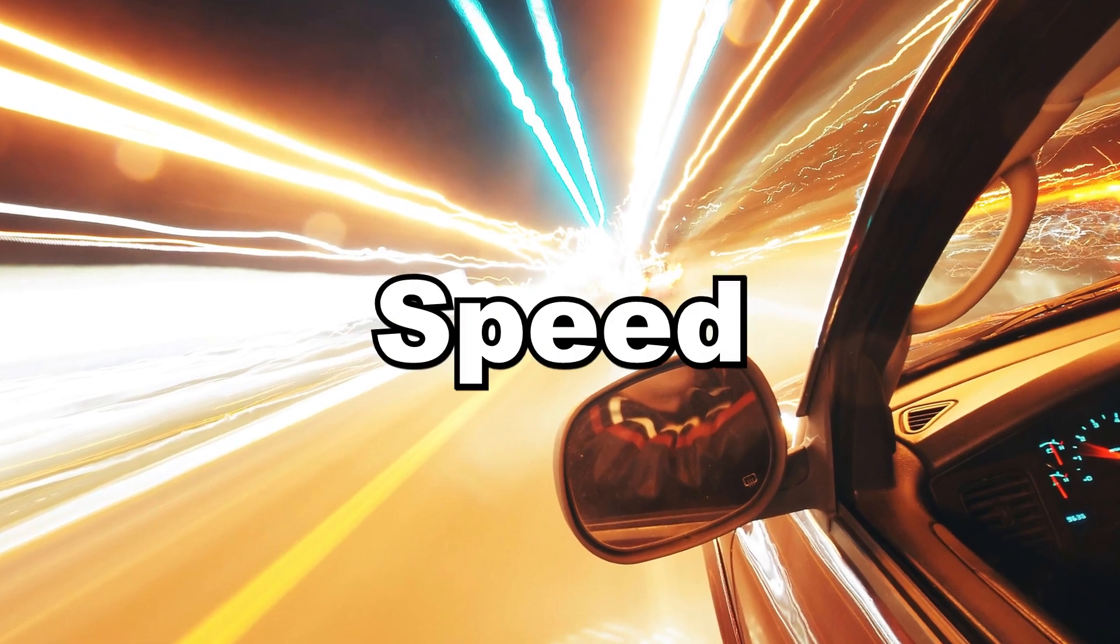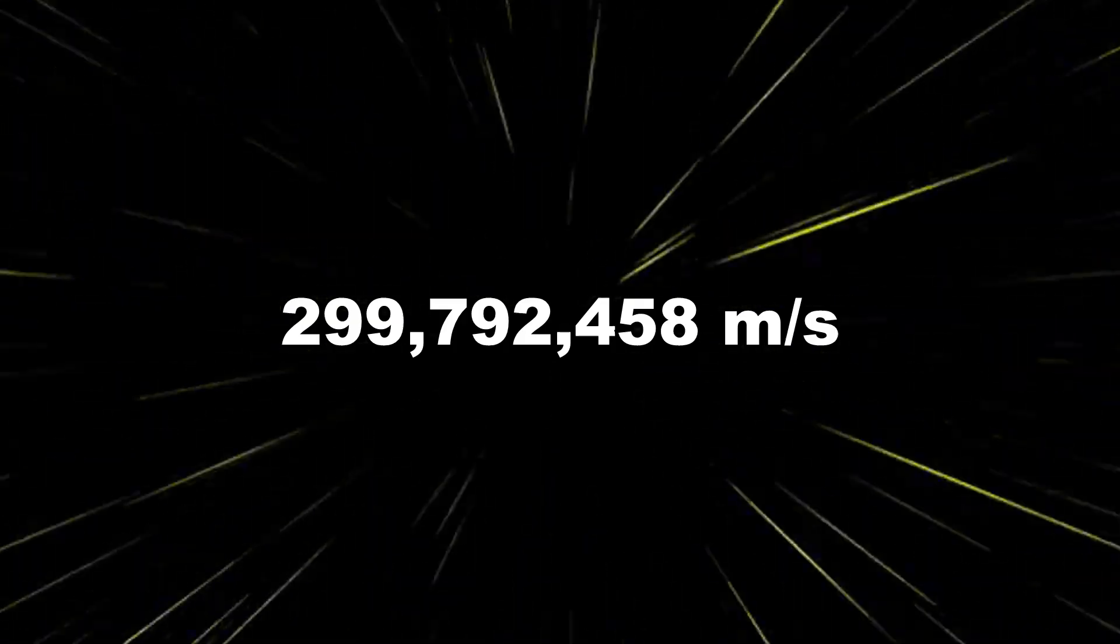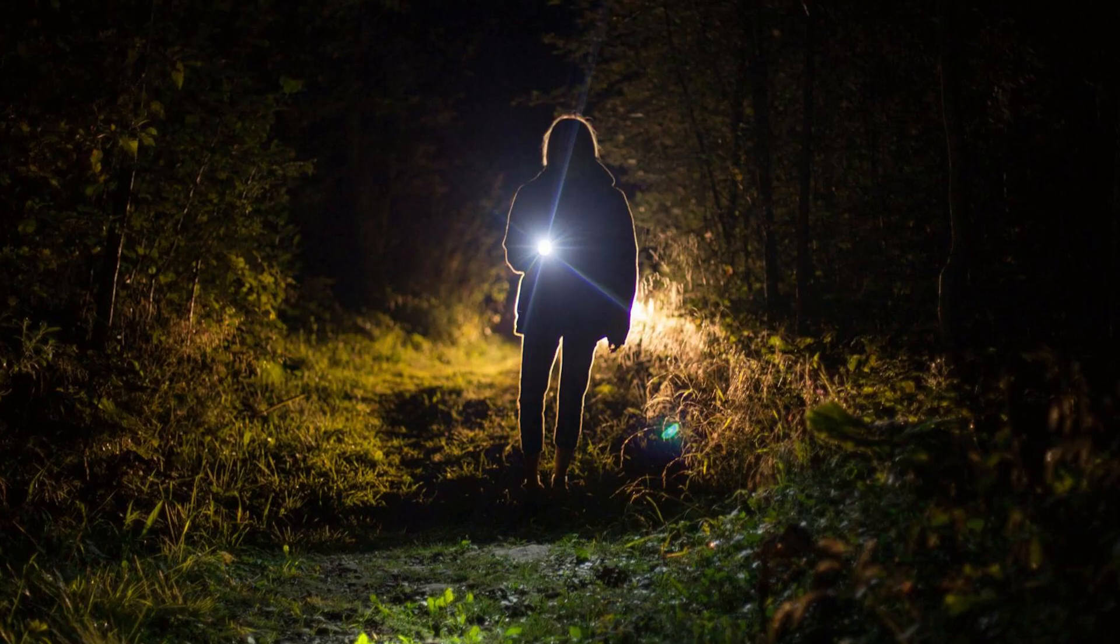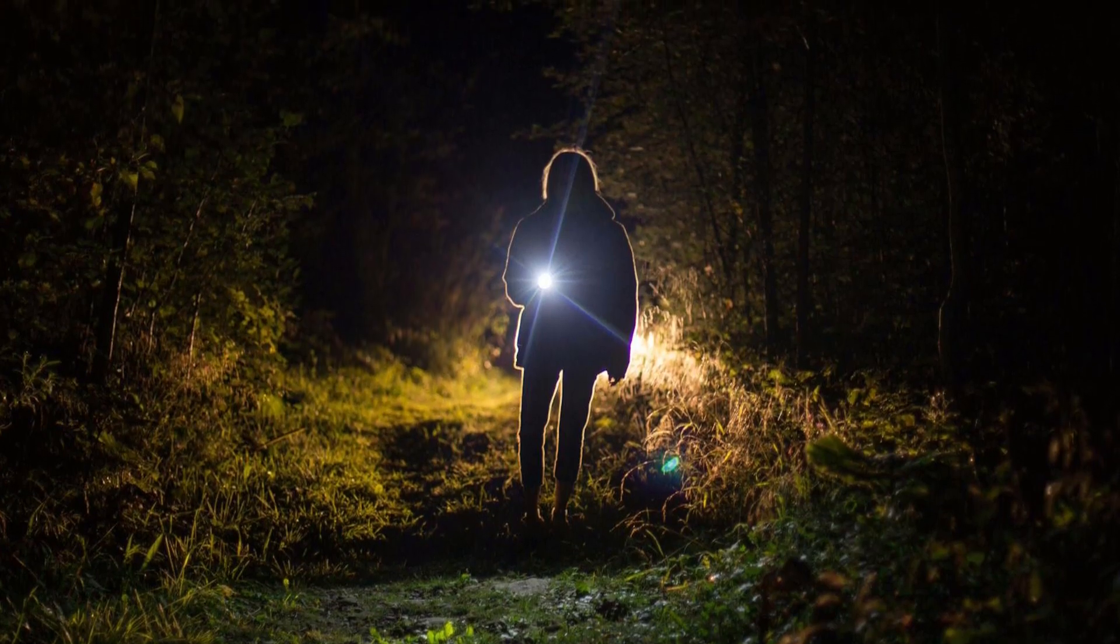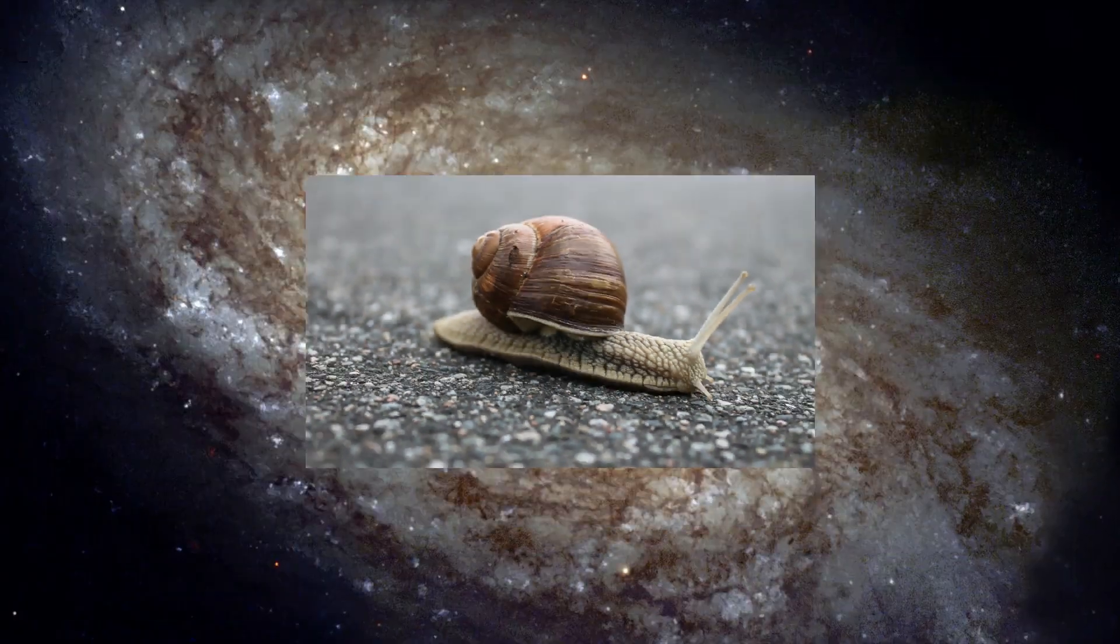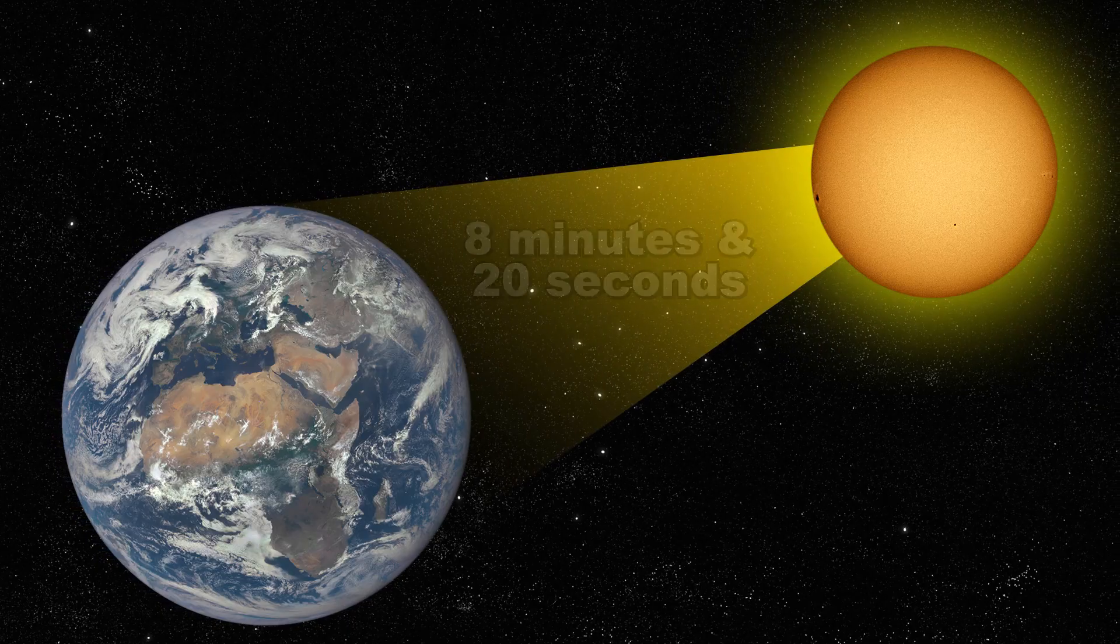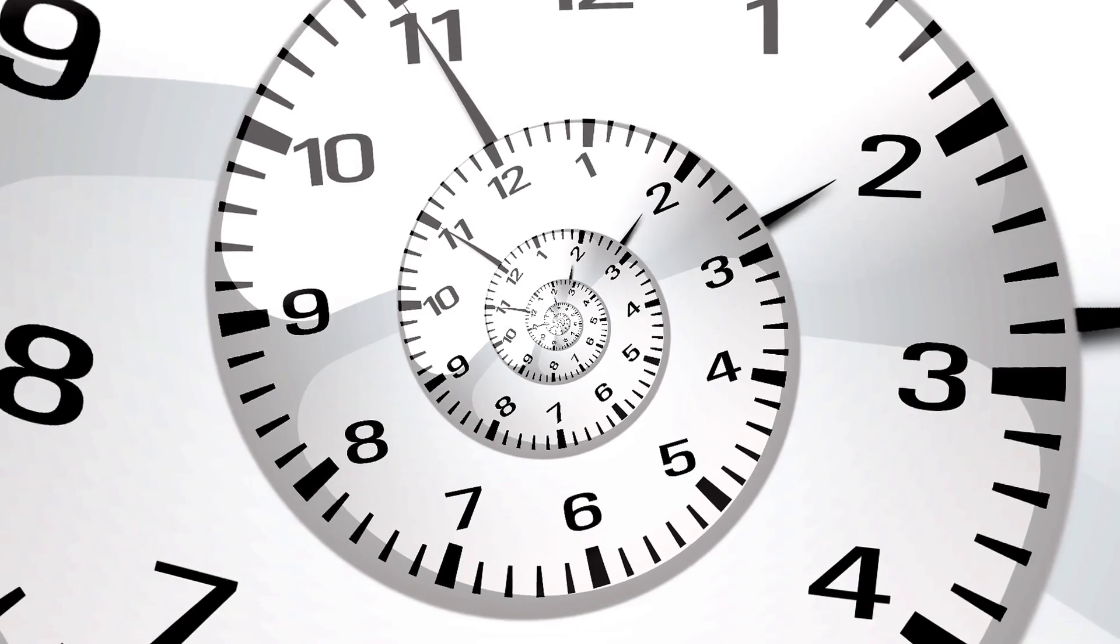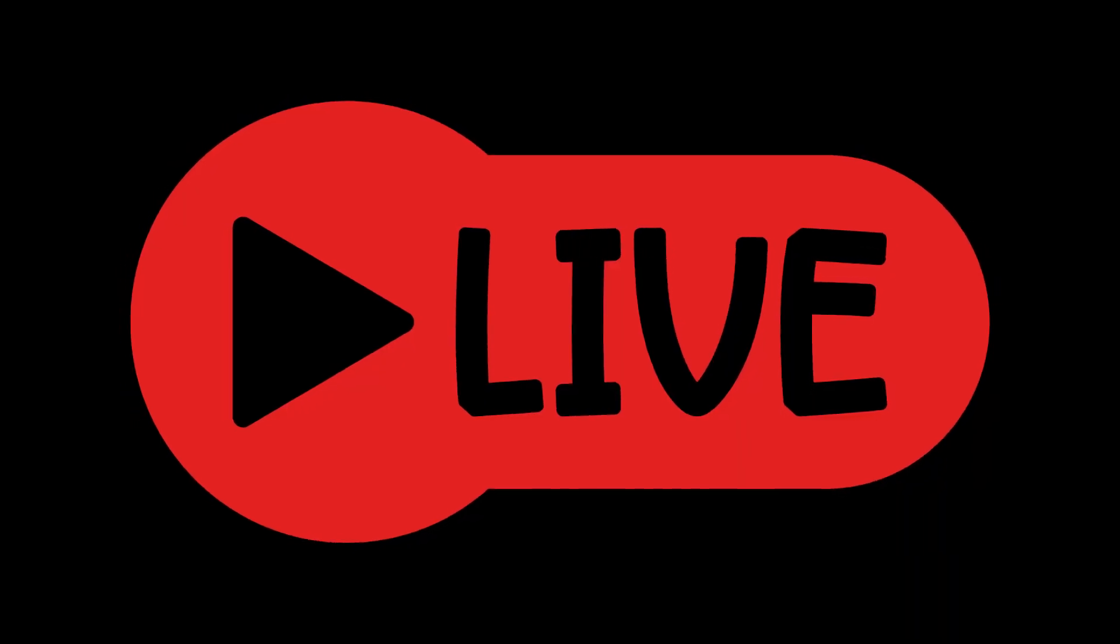The first method is speed. At 300,000 kilometers per second, light is the cosmic speed limit. Nothing with mass can reach or exceed it. Even though light is insanely fast, it feels really slow over cosmic distances. Sunlight takes eight minutes to reach us, while light from distant galaxies takes billions of years. This means now is relative.